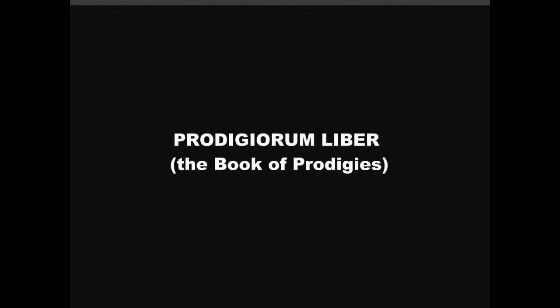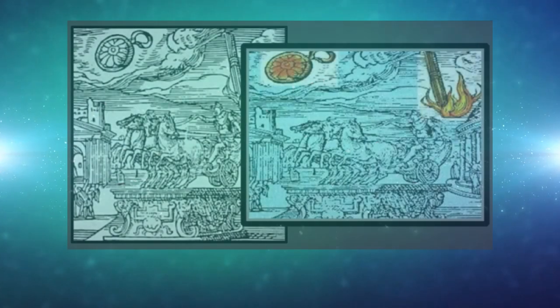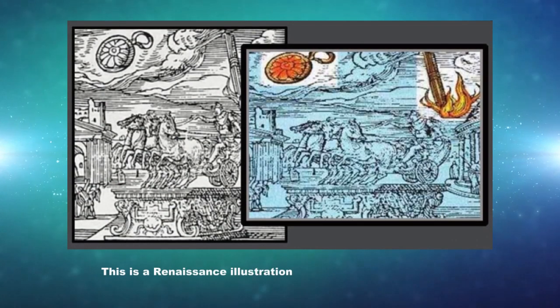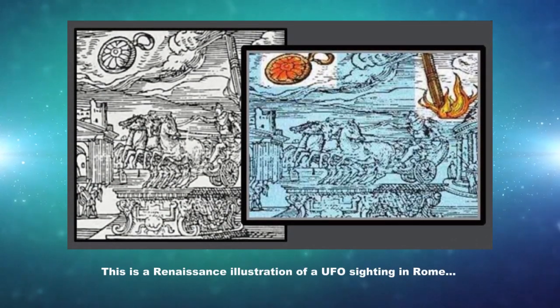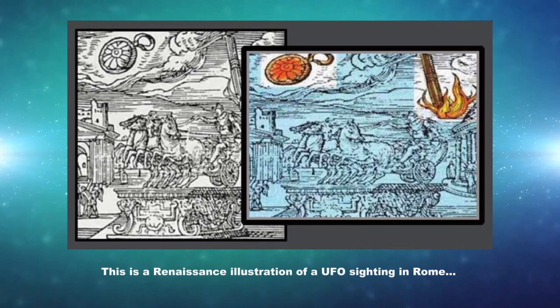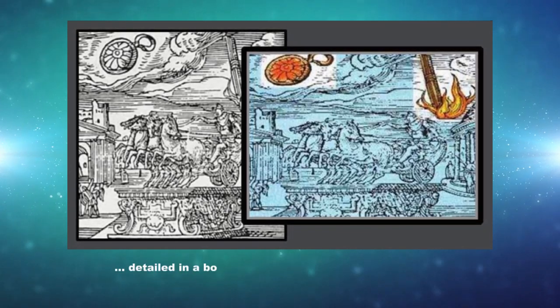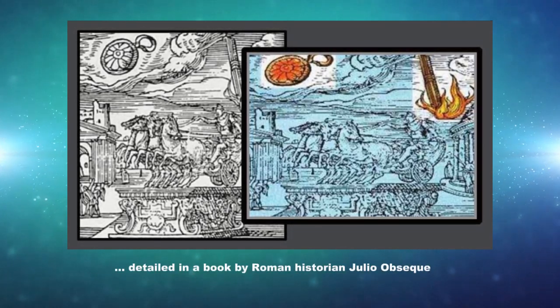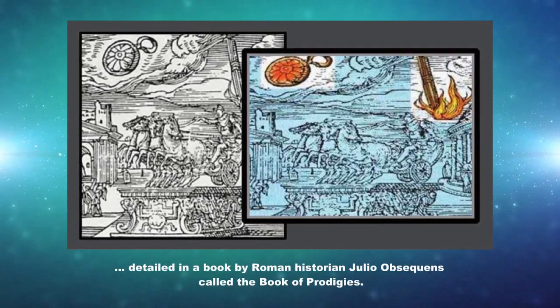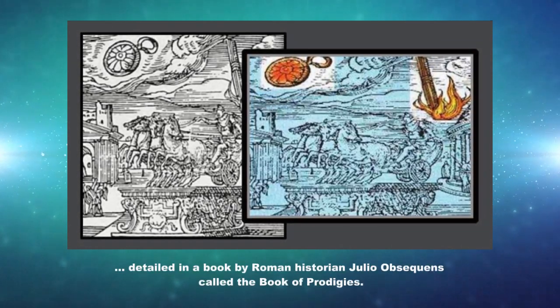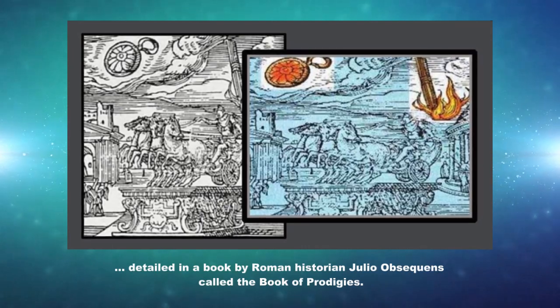Prodigerum Liber – The Book of Prodigies: this is a Renaissance illustration of a UFO sighting in Rome, detailed in a book by Roman historian Giulio Obsequens called The Book of Prodigies.